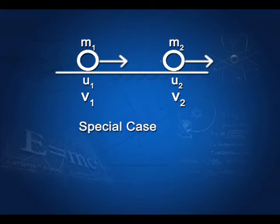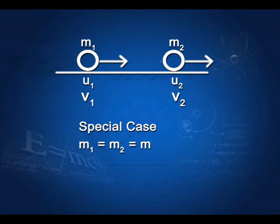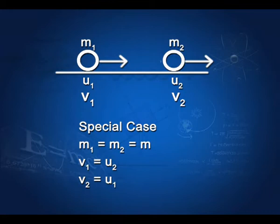Let us consider Special Case 1, in which the mass of the two spherical colliding bodies is the same — it is not necessary that their initial speeds are the same. If you use this in equations 7 and 8, you will find that v1 works out to be equal to u2, and v2 works out to be equal to u1. That means there is an exact interchange of velocities for two bodies of equal mass.